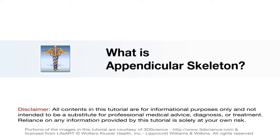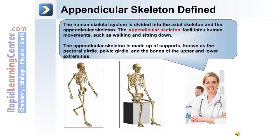Let's begin with an overview of the appendicular skeleton. As we mentioned, the human skeletal system is divided into the axial skeleton and the appendicular skeleton. The appendicular skeleton facilitates human movements such as walking and sitting down. It is made up of supports known as the pectoral girdle, the pelvic girdle, and the bones of the upper and lower extremities.